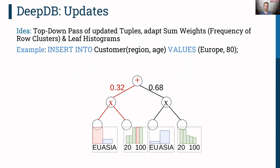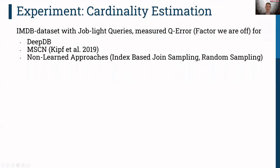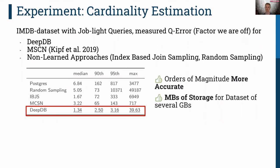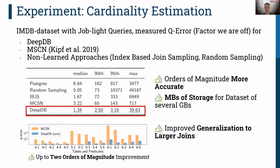Our update procedure is very efficient since we do not have to retrain the model. We evaluated DeepDB's accuracy for cardinality estimation using the standard JOB-light benchmark and report the Q-error — where 1 is best. We compare against MSCN, a workload-driven approach, and state-of-the-art classical approaches. DeepDB is orders of magnitude more accurate and requires only megabytes of storage. We also varied the number of joined tables and predicates: DeepDB generalizes much better to larger joins than competitors, showing that combining several RSPNs works well in practice. A recent paper, NeuroCard, uses similar techniques and also confirms that data-driven models are more suited for cardinality estimation.